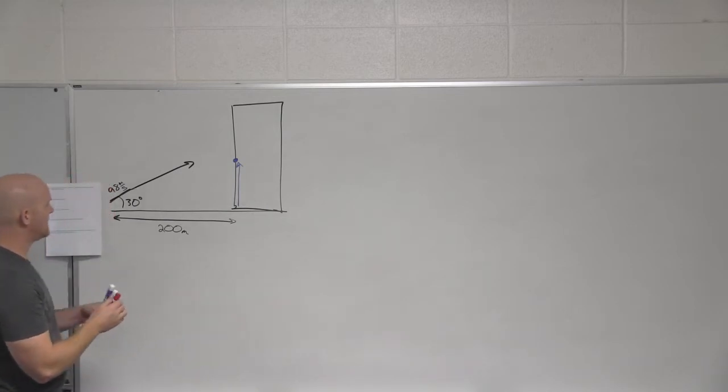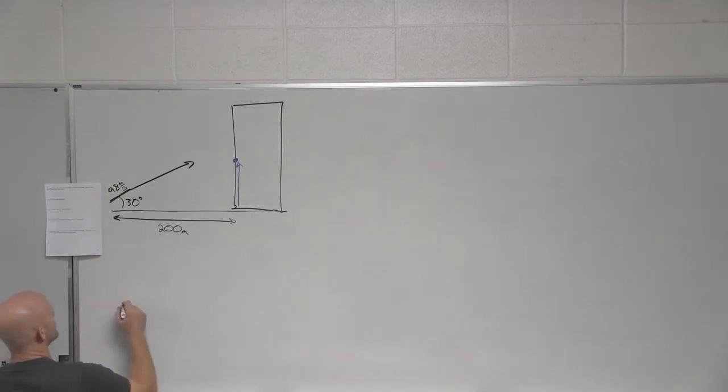So in this case, I've used numbers that are nice and convenient here. If we look again at that 98 meters per second at an angle of 30 degrees, what is my x component again? Yeah, so it's 98 cosine 30, which we already solved was 84.9 meters per second.